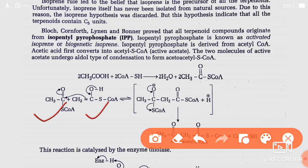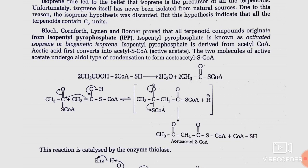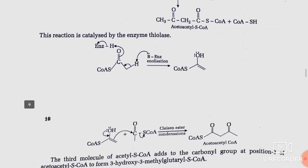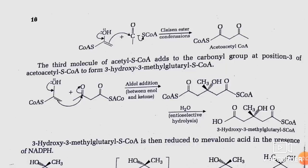For isopentyl pyrophosphate formation: the two molecules of active acetate undergo aldol condensation — condensation of the carbonyl compound with LDHR ketones — and finally form acetoacetyl-S-coenzyme A. This reaction is catalyzed by the enzyme thiolase. Then there is further Claisen ester condensation, and acetoacetyl-S-coenzyme A formation takes place.